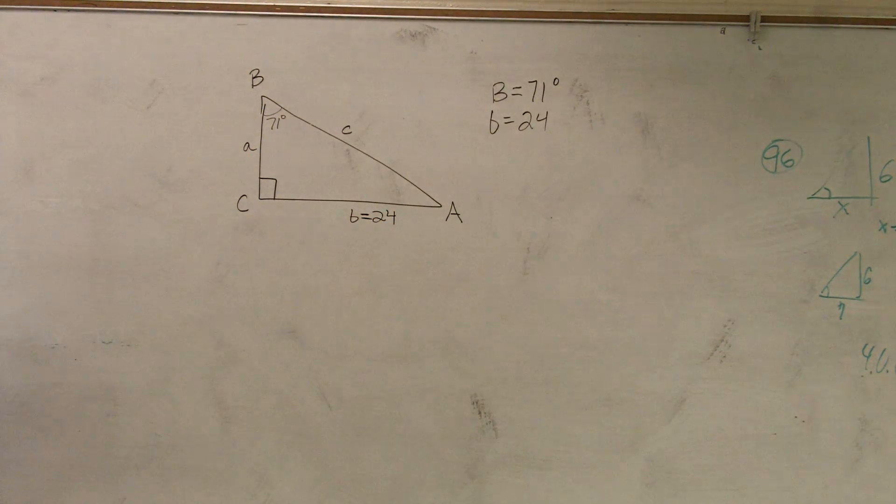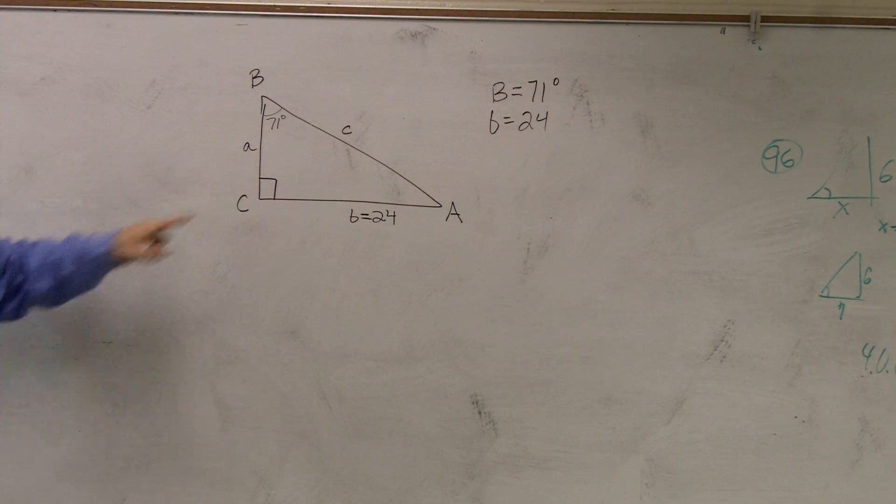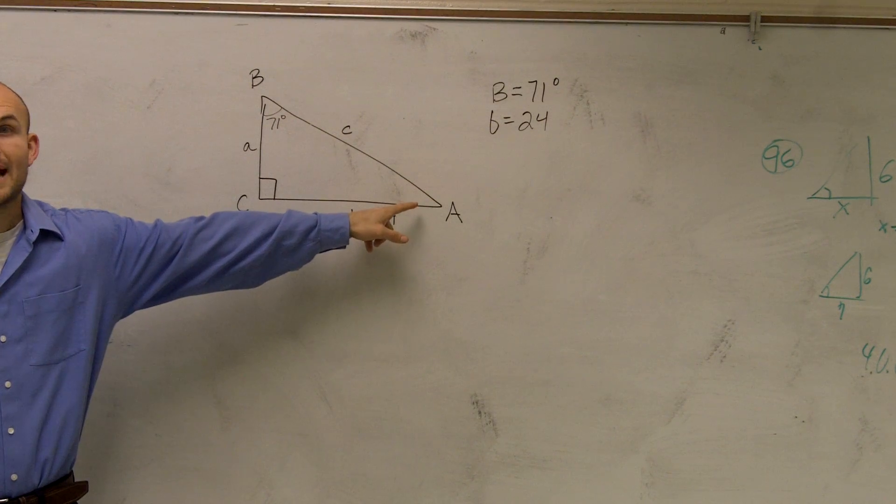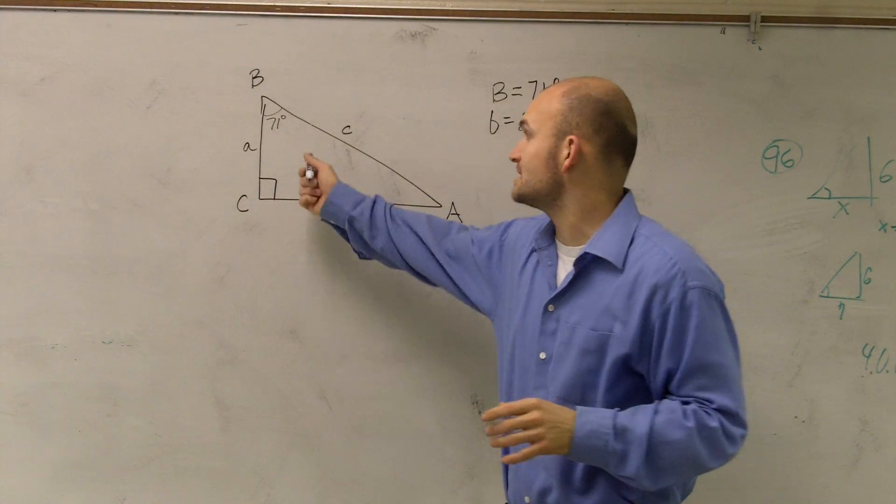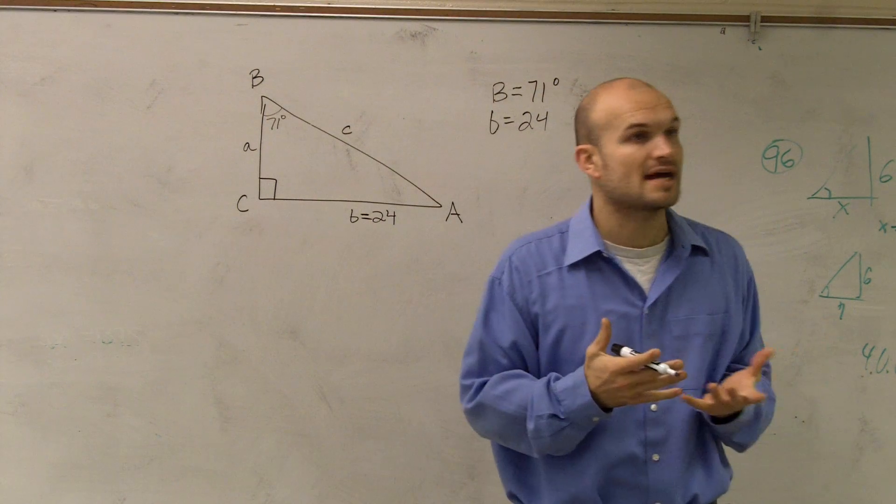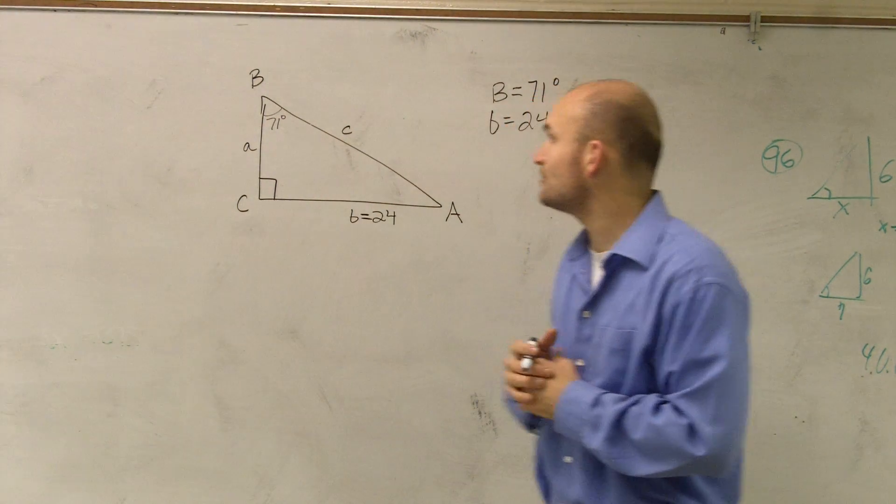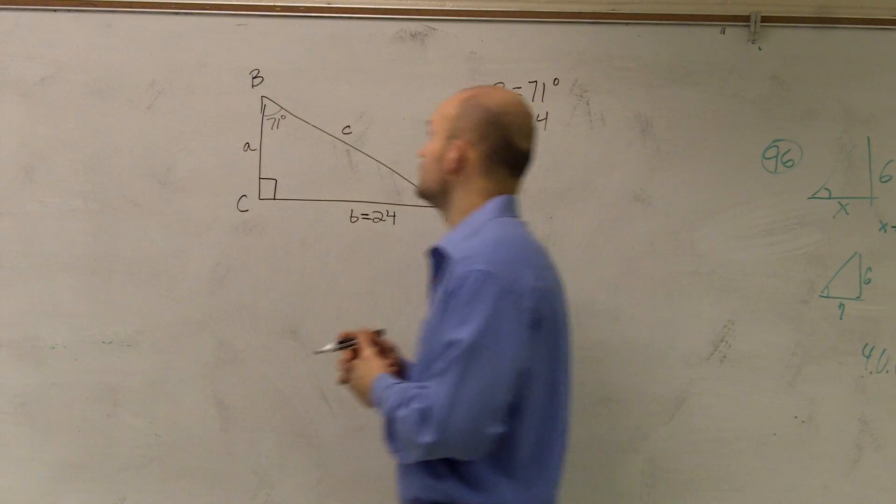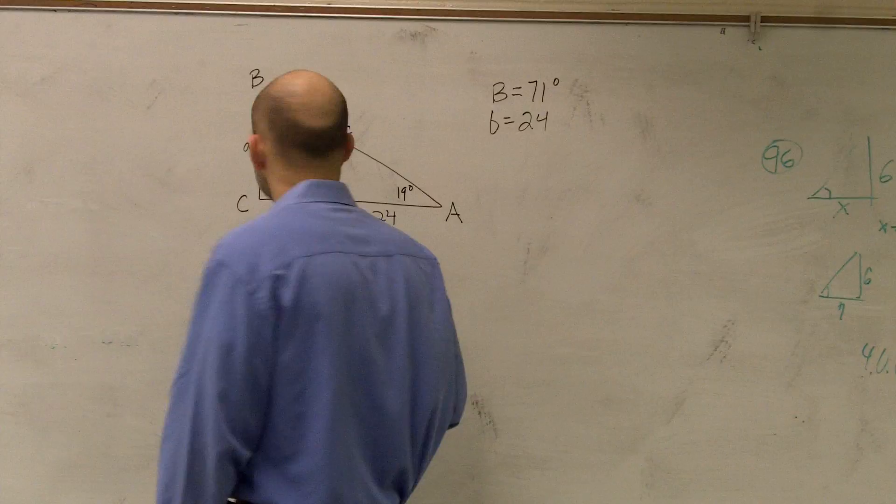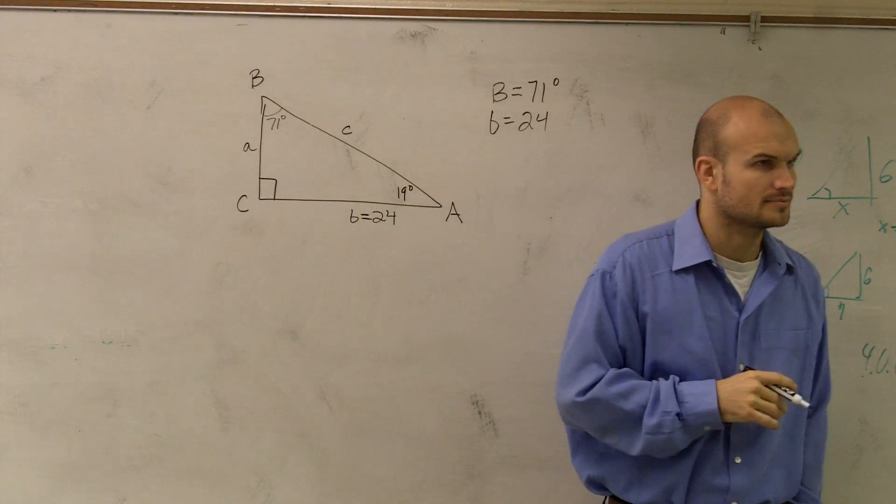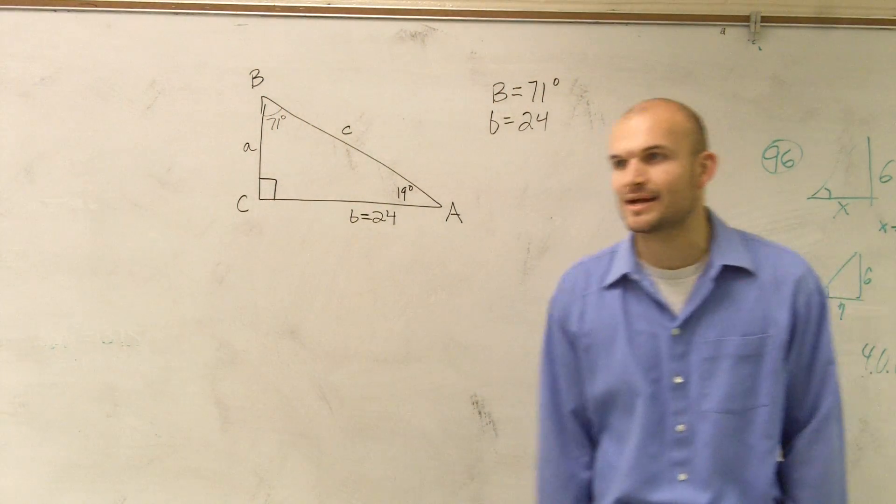Now remember, this is the right angle, so that obviously is going to equal 90 degrees. So therefore, we need to find our missing angle as well. Because remember, all angles in a triangle add up to 180. So we have 90 plus 71 is going to be 161, so we'll have 19 degrees. Did everybody follow me on how I did that? Just good old geometry coming back at us.